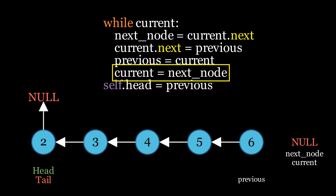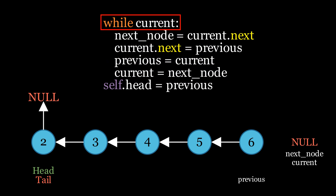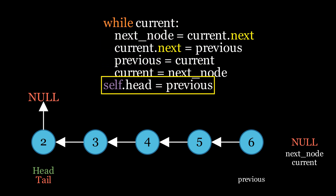Once current becomes None, the loop will break. Finally, we update the head to point to previous, which is now the new head of the reversed list.